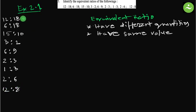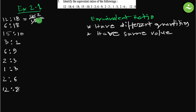12 is to 18 equals to 12 by 18. If we simplify and divide both by the largest common factor, which is 6, 12 divided by 6 is 2 and 18 divided by 6 is 3. So 12 is to 18 equals to 2 is to 3.